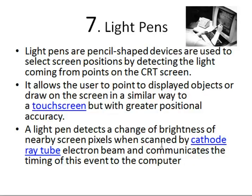A light pen detects a change of brightness of nearby screen pixels when scanned by a cathode ray tube electron beam and communicates the timing of this event to the computer. When the screen refreshes, it marks the position where it detected the change in pixel brightness and records it, sending it to the system.